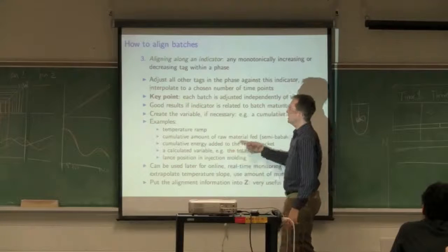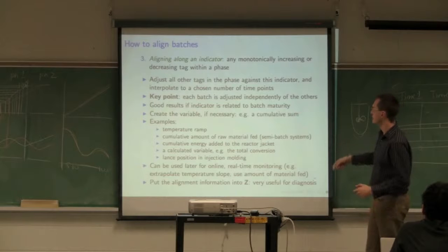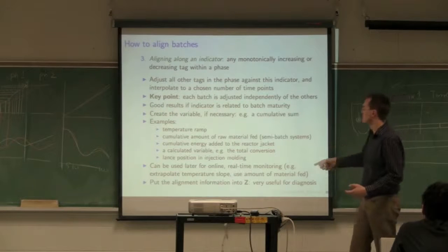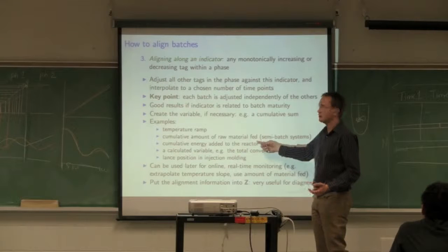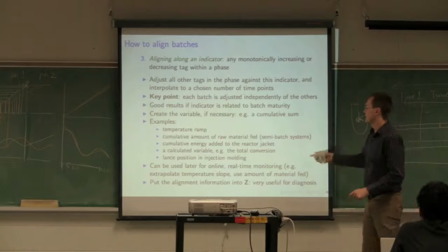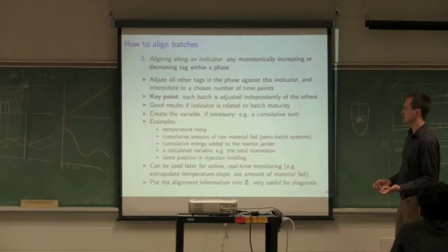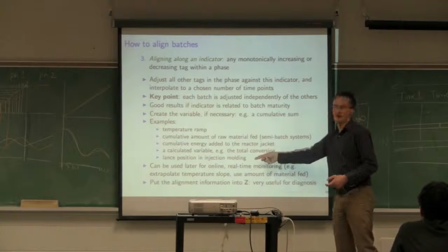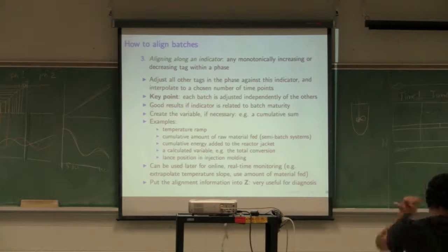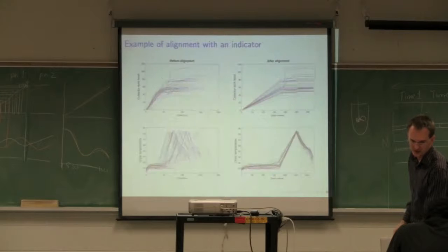Here's some variables you can use: a temperature ramp. If you don't have something like that, you can create a variable that's guaranteed to increase. For example, the cumulative volume or mass of raw material you feed to the batch, or cumulative energy added or removed from the reactor. Total conversion, or if you've got injection molding, you can use position of the screw. All of these are valid indicators.